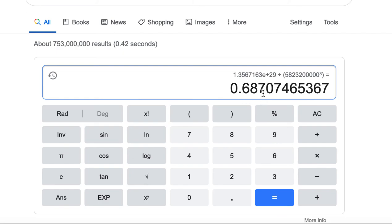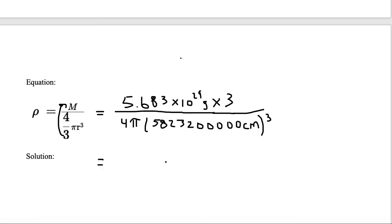And we have a value of 0.687. So the 7 is greater than 5, so we can kick the 8 up. So we have 0.69.